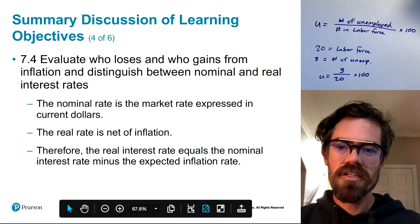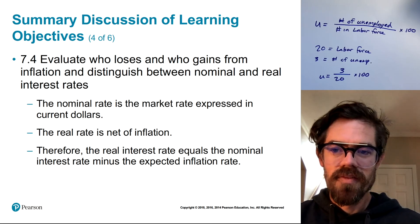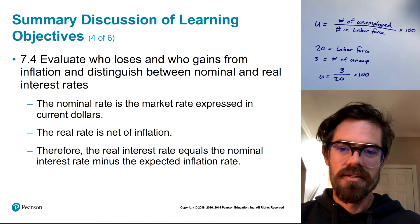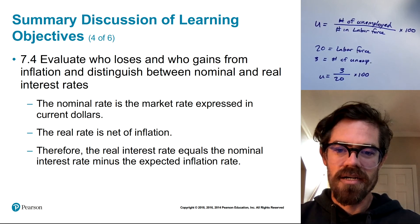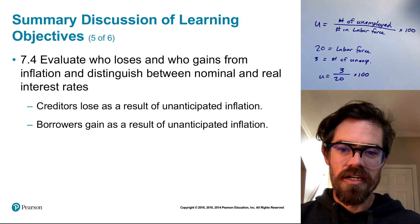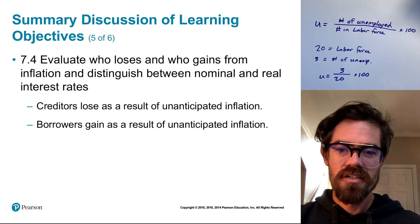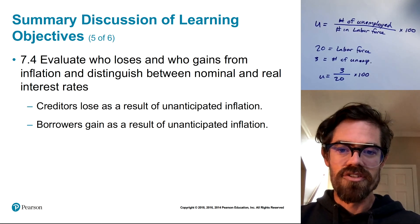In Section 4, we talked about inflation and evaluated who loses and who gains from unanticipated inflation, and we distinguished between nominal and real interest rates. The real interest rate is the nominal interest rate minus the expected inflation rate. People that lend money — creditors — lose out from unanticipated inflation, while people that borrow money — debtors — gain. Conversely, creditors are benefited and borrowers are hurt by unanticipated deflation.